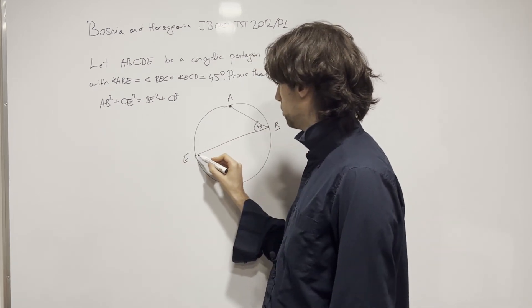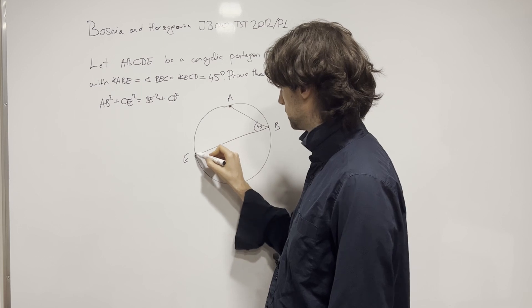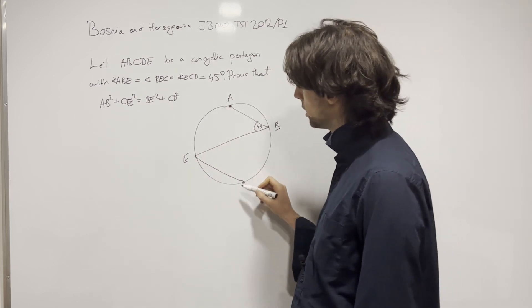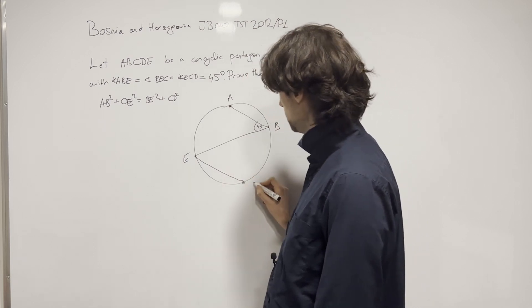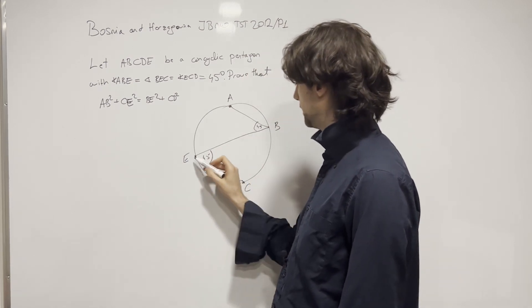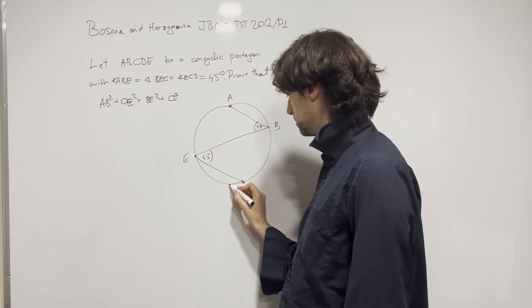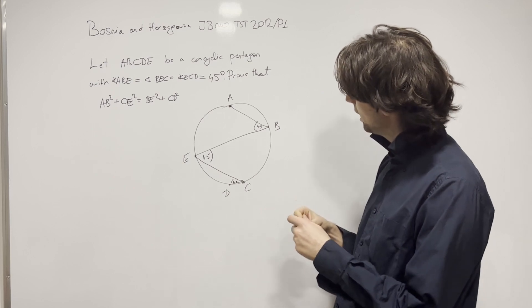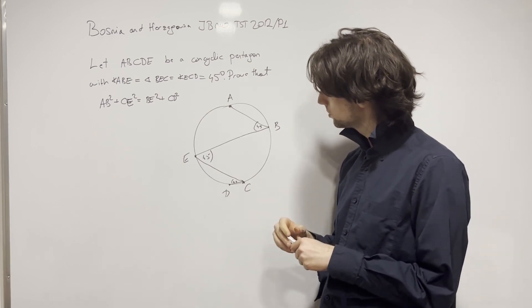And now I need BEC to also be 45. So this is 90, and then this is BEC. ECD also 45. And then ECD is also 45. It doesn't look like it.